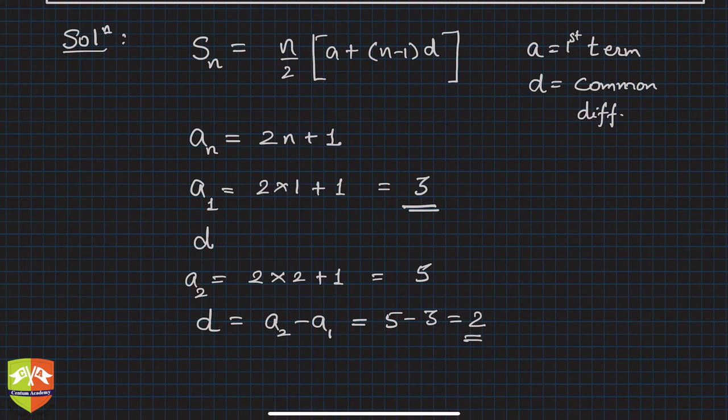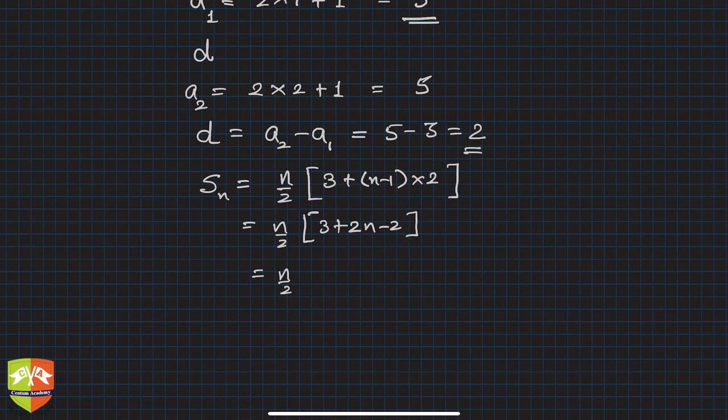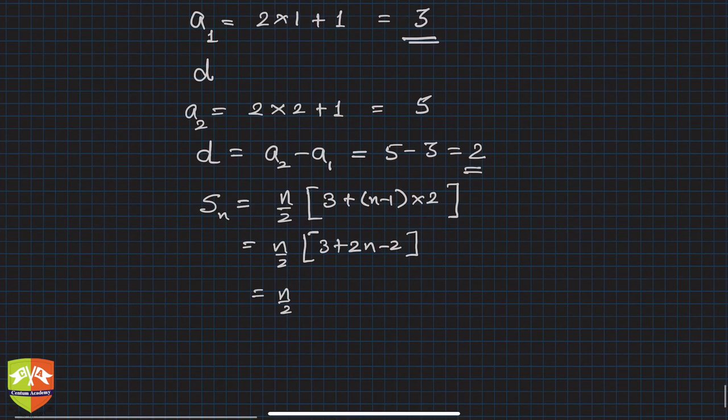So clearly we got a as 3 and d as 2. Now we can deploy that in the given formula. So S_n is equal to n by 2, for any n, times [3 plus (n minus 1) times 2]. If you simplify this you'll get n by 2 into [3 plus 2n minus 2]. One thing which we missed is this is 2 into 3, so this is 6 plus 2n minus 2.